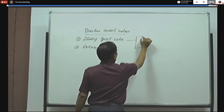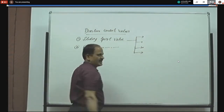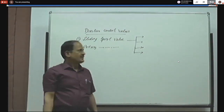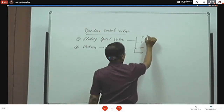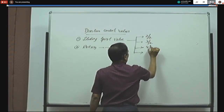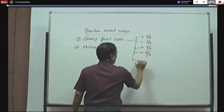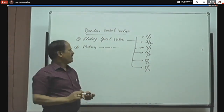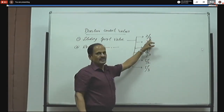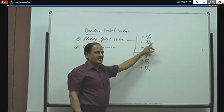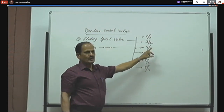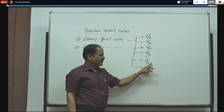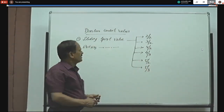In the case of sliding spool valve, due to the sliding of a spool inside the valve body, the number of ports made on the valve body can be opened and closed. Depending upon the number of ports and positions, the sliding spool valves are again classified into 2x2, 3x2, 4x2, 4x3, 5x2, and 5x3 DC valves.